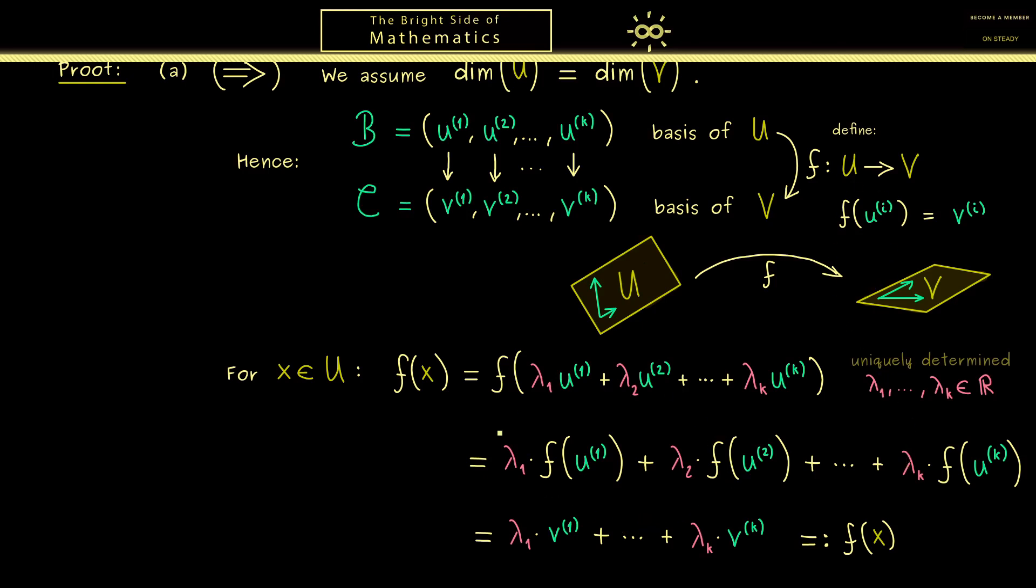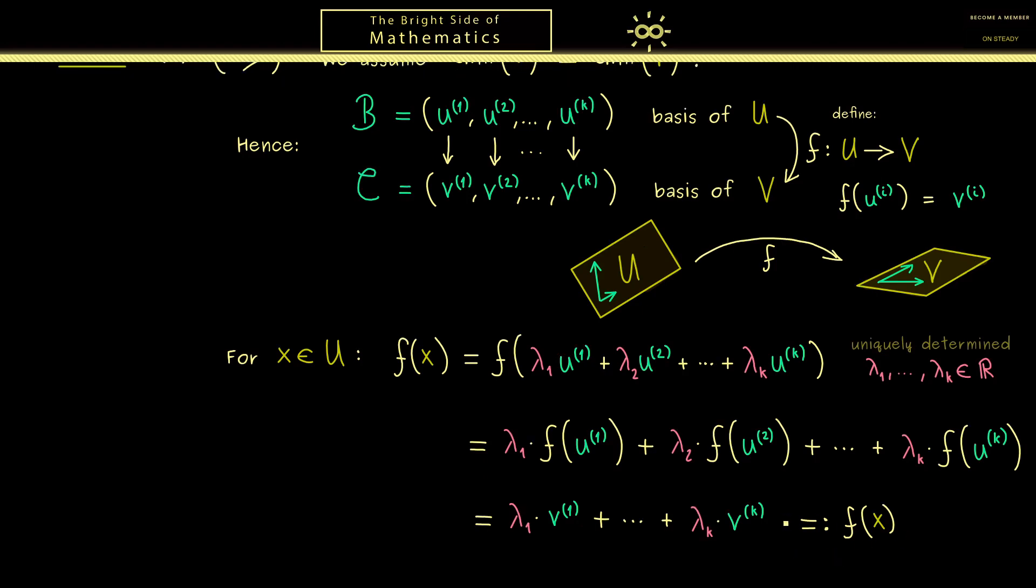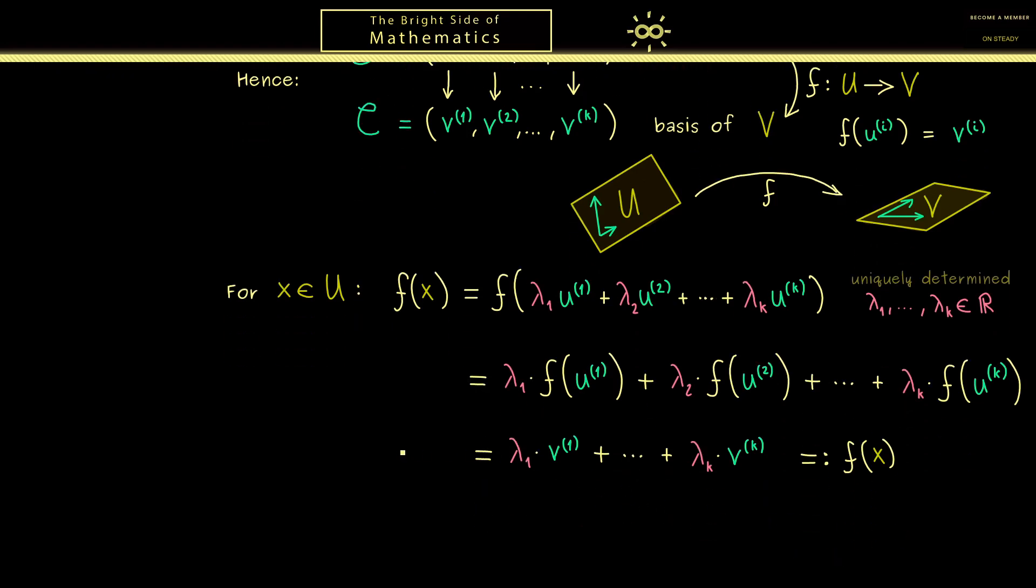Therefore the only thing that remains to show is now that F is also bijective. In fact we can simply show this by defining the inverse map. And there maybe not so surprising we do exactly the same thing as before. So we simply send the basis vectors in V to the basis vectors in U. So this with the same calculation as before gives us a new linear map and it turns out this is actually the inverse of F.